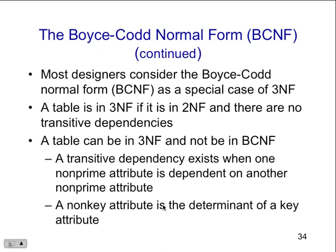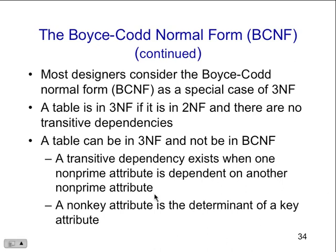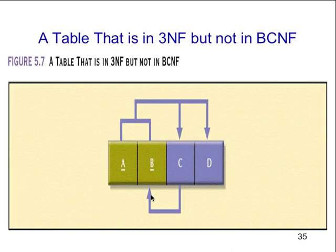Any non-key attribute that is a determinant of other non-key attributes is the core issue. As a special note, this exists when you don't identify primary keys. If you don't have primary keys in the table — and a lot of people leave that out — you're not going to be in BCNF, and most likely you're going to be in second normal form. You might accidentally get it right and reach third normal form, but you'll never be in BCNF.